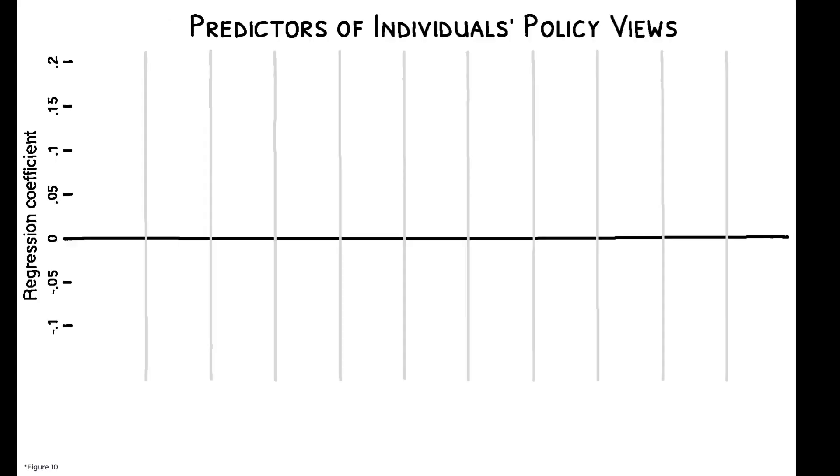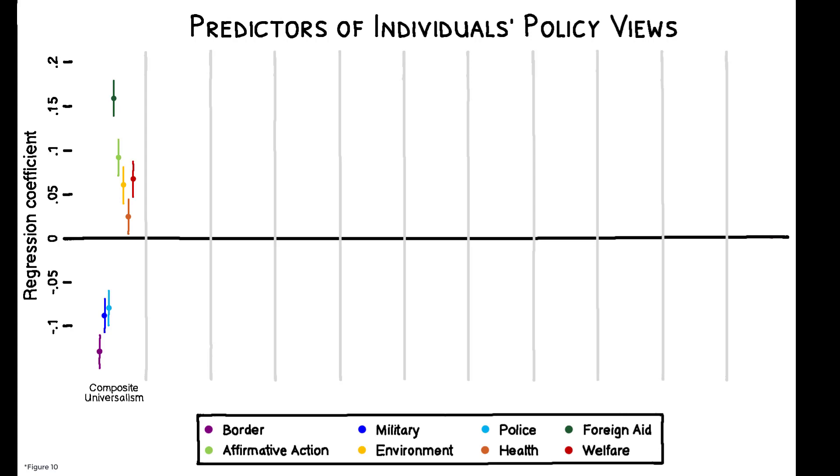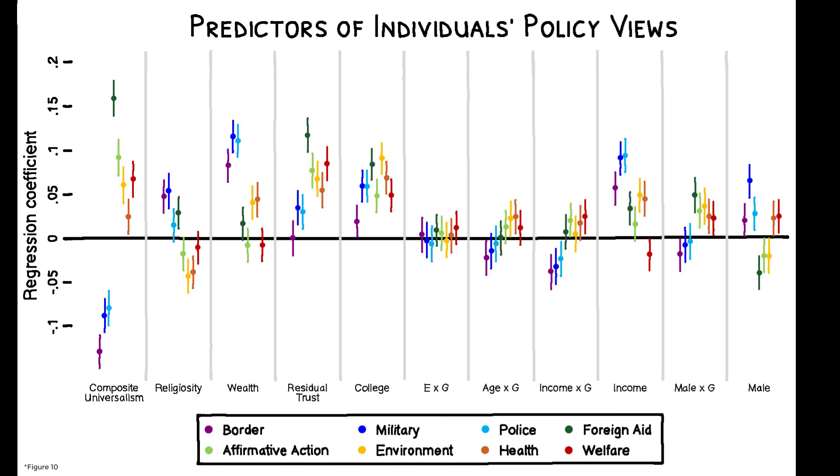To show this in a different way, recall that universalism is correlated with policy views in a pattern that exactly replicates the usual left-right ideological clusters. The authors identify ten other characteristics that are strongly related to respondents' self-reported ideology, and show that none can replicate that same pattern of policy correlations in a statistically or economically significant manner.